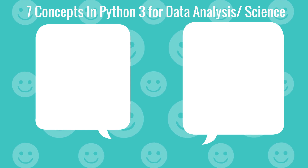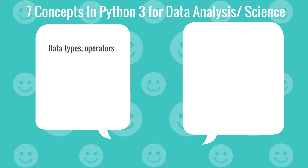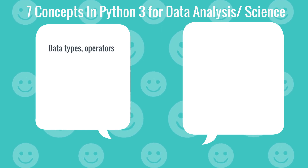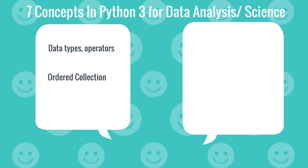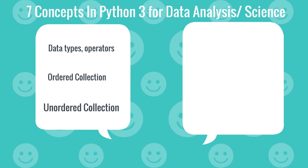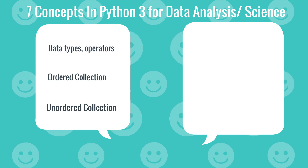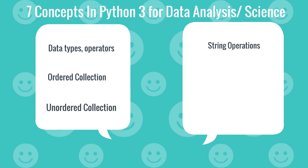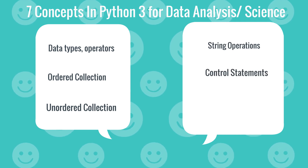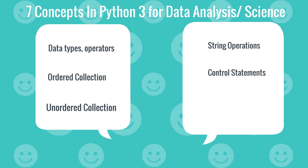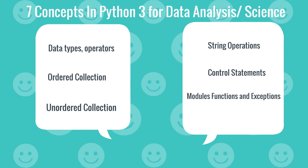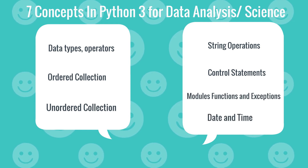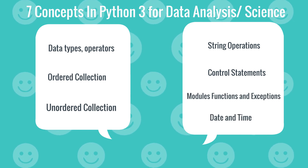These seven different concepts that you must know are: the types of data and the operators that you can use on them, ordered collection, unordered collection, string operations, control statements, creating and using modules and functions, and finally, date and time.